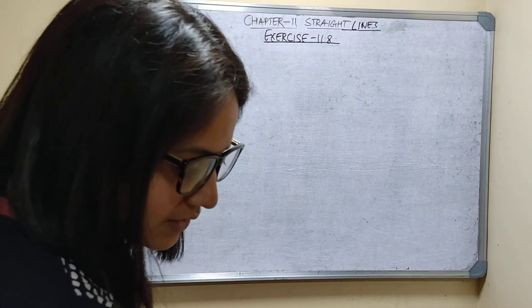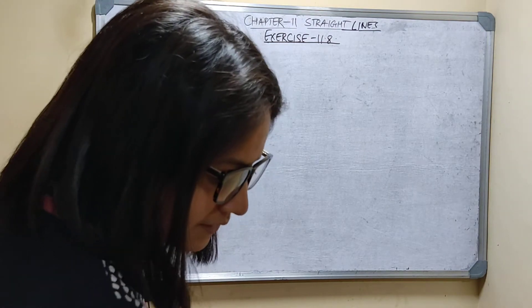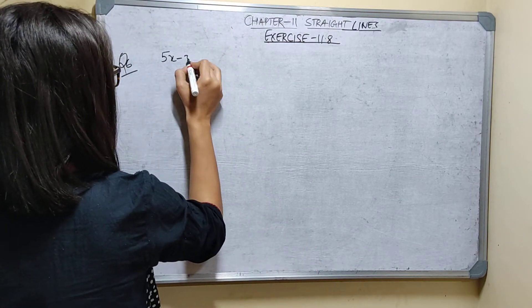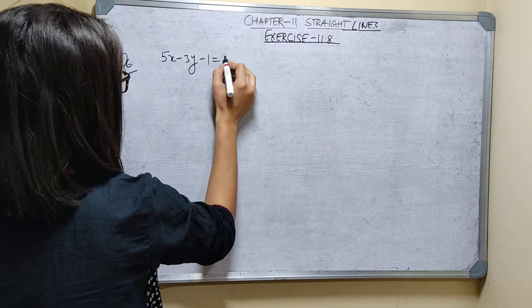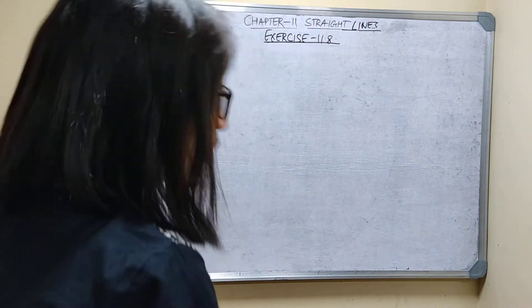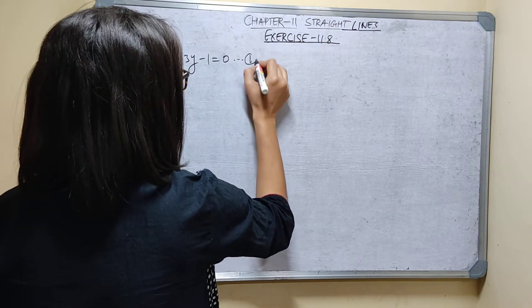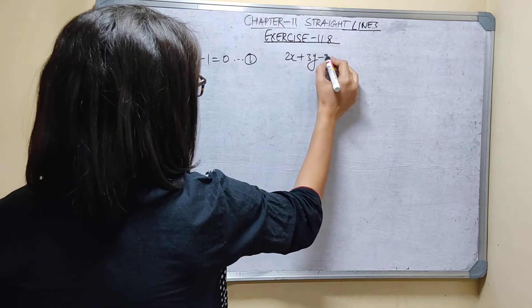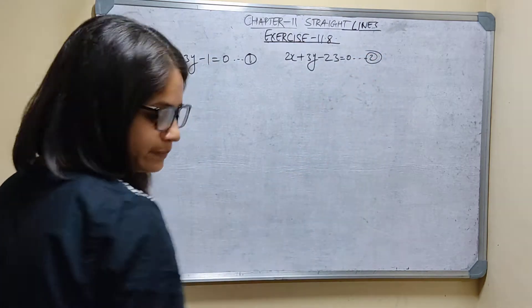Question number 6. Find the equation of the line through the point of intersection of the lines. Lines are given: 5x minus 3y is equal to 1, so I am writing 5x minus 3y minus 1 is equal to 0. And 2x plus 3y is equal to 23, so 2x plus 3y minus 23 is equal to 0.